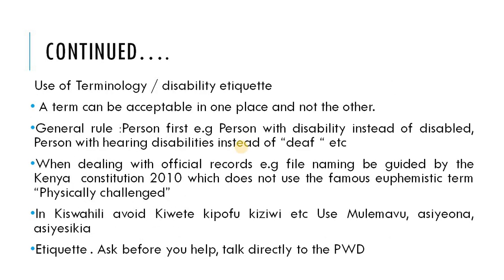When talking about disabilities, you must use terminology that is disability-friendly and observe disability etiquette, so that you don't offend the person with disabilities that you're serving. It is important to note that a term can be acceptable in one place and not acceptable in another. The general rule is person first — you look at the person and not their disability. For example, we say 'persons with disability' instead of 'disabled person,' and 'person with hearing disabilities' instead of 'deaf.'